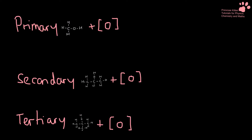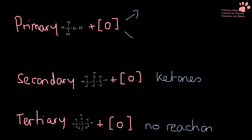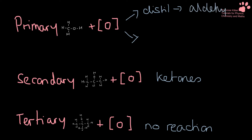What they end up as depends on whether it is a primary, secondary or tertiary alcohol. Starting with the easy one: tertiary alcohols — we can't oxidise those, there is going to be no reaction. Secondary alcohols are going to turn into ketones. And primary alcohols, depending on how we heat them, are going to turn into different things. If we distil a primary alcohol, we are going to get an aldehyde. And if we reflux it, we are going to get a carboxylic acid.